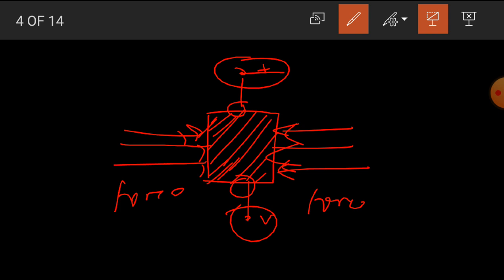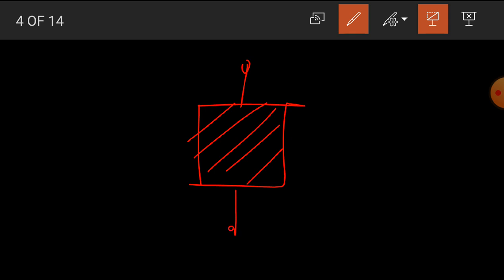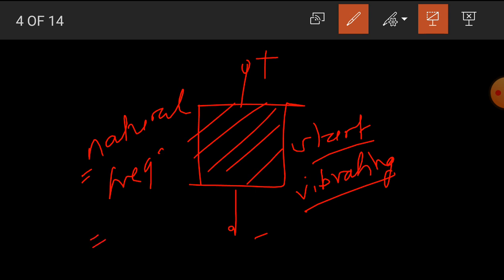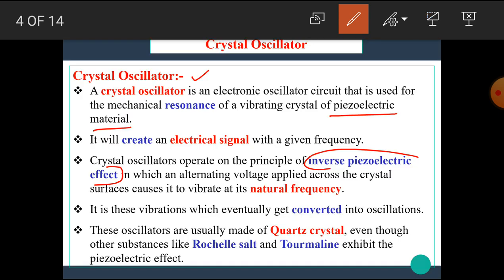This is known as the piezoelectric effect. And the inverse piezoelectric effect states that if we apply the electric potential — that means the supply, positive and negative — across a crystal, then this crystal starts vibrating at its axis. When the vibration frequency is equal to the natural frequency of the oscillator, the crystal vibrates with maximum capacity. That means the crystal is vibrating at its resonating frequency. This is known as the inverse piezoelectric effect, and this effect is used in the crystal oscillator circuit.